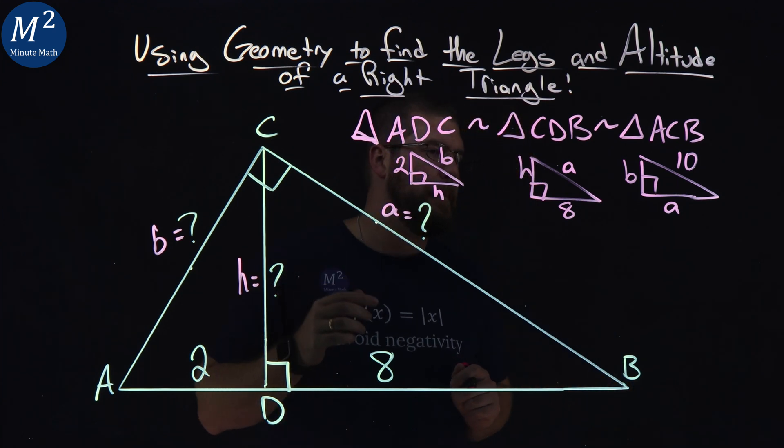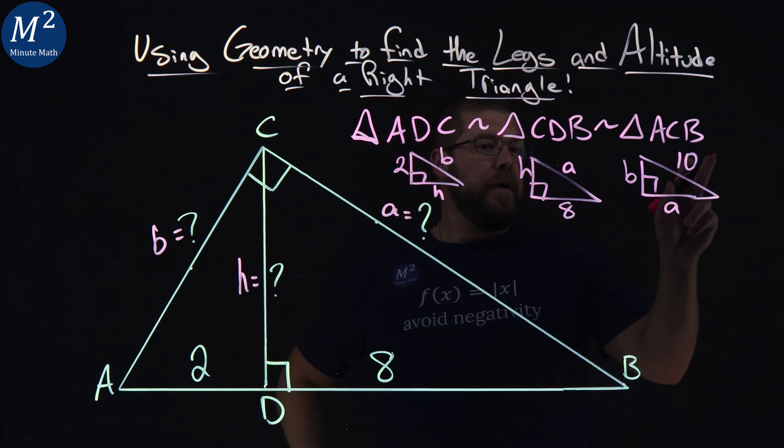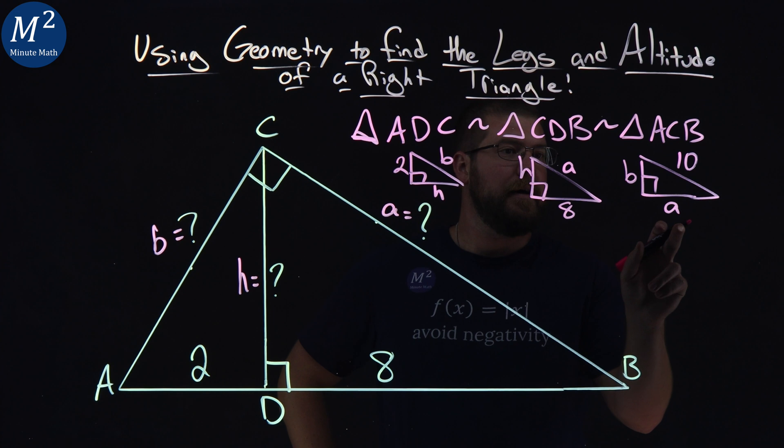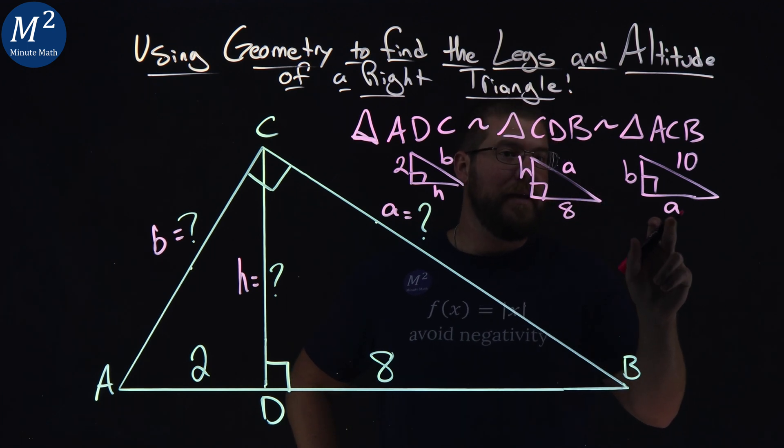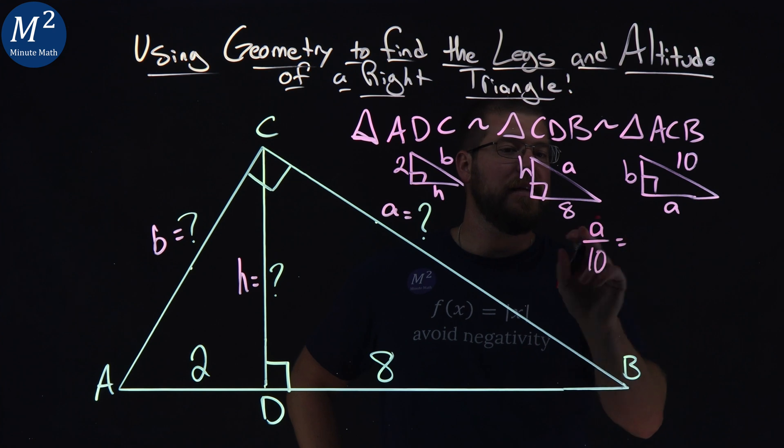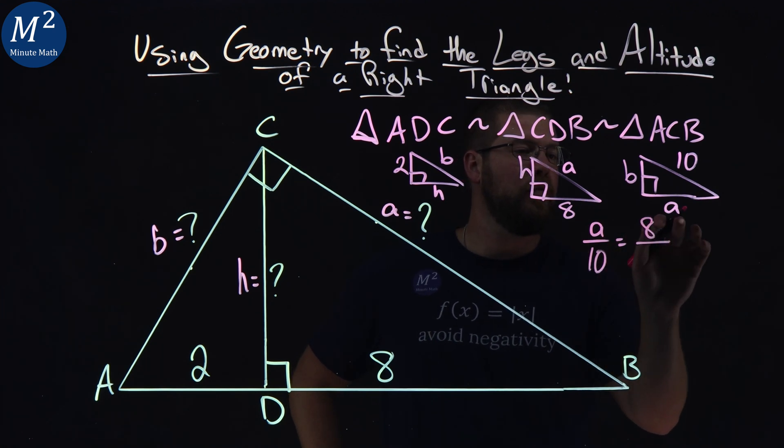So my guess is each one has a way that we can put them together to get a proportion, to get a variable by itself with a number, get the answer. That's the goal here. So what I'm looking for here, we have a, 10, 8, and a. Look at that. We have one variable that's repeated.